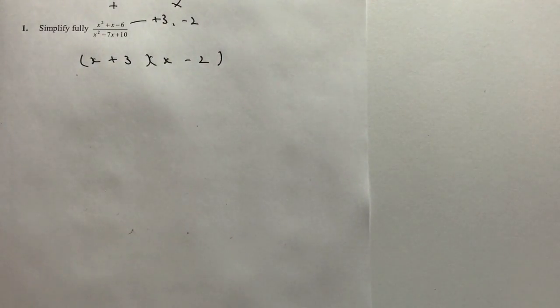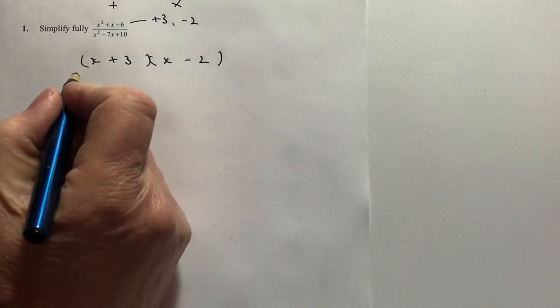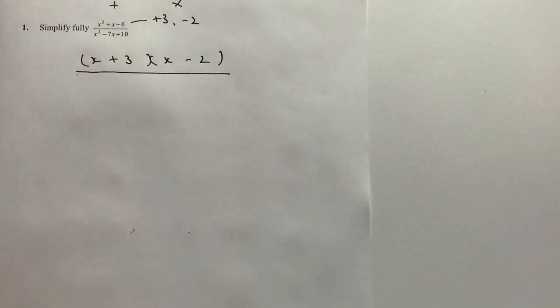So the top factorising will be x plus three brackets x minus two. Okay, so the bottom one I'm going to go in exactly the same way.